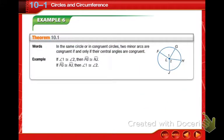Next one. I don't want you to write this down. You don't have to. In the same circle or in congruent circles, two minor arcs are congruent if and only if their central angles are congruent.